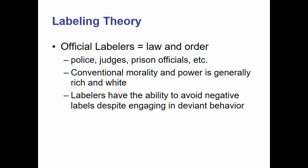Labeling theorists are also interested in official labelers — people in authority that can decide who is the criminal and who is not. So we're interested in police, judges, prison officials, various types of social workers, various government agencies, etc. We also point out that conventional morality and power is generally rich and white. Those people in high levels of authority often have more money than the rest of us, and the people in power are overwhelmingly white of European descent.